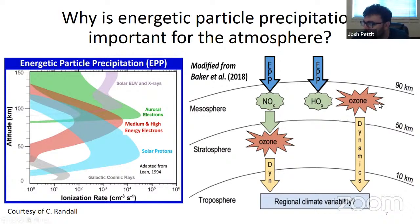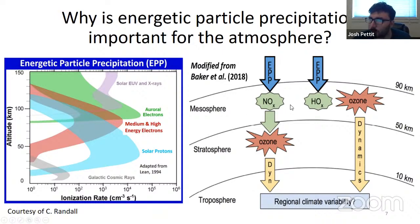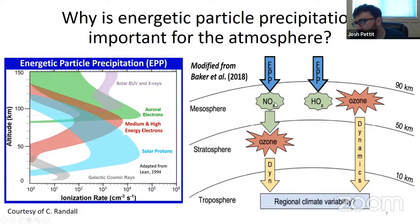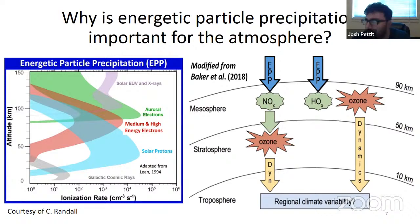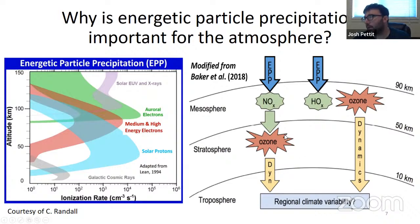There is mesospheric ozone, which is often destroyed by the HOx chemistry generated from the electrons. But the NOx chemistry is much more interesting, because in the polar winter, NOx isn't destroyed by light. If you generate NOx in the summertime from energetic electrons, the light will destroy most of the NOx very quickly. However, in the wintertime, when there is no light, NOx is actually controlled dynamically and can descend from the mesosphere into the stratosphere, where it can destroy ozone.